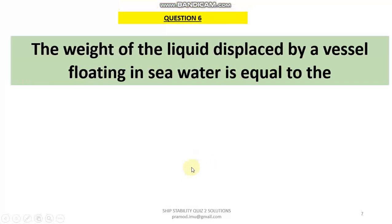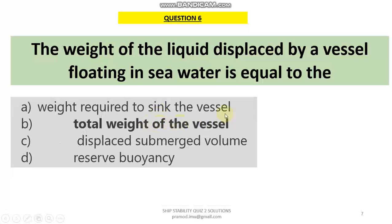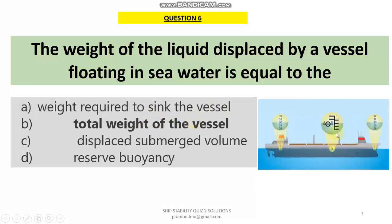Question 6: The weight of liquid displaced by a vessel floating in seawater — this question is based on Archimedes' principle. The answer is B: the total weight of the vessel. When a ship floats in water, the weight of the liquid displaced by the vessel should be equal to the total weight of the vessel. That is the fundamental law of floatation per Archimedes' principle.